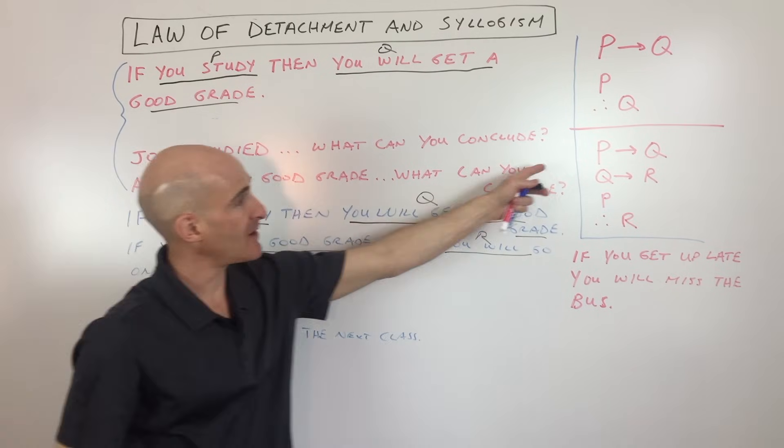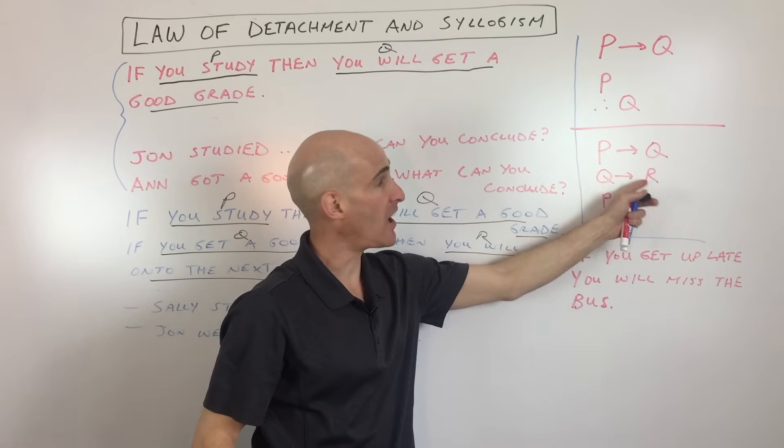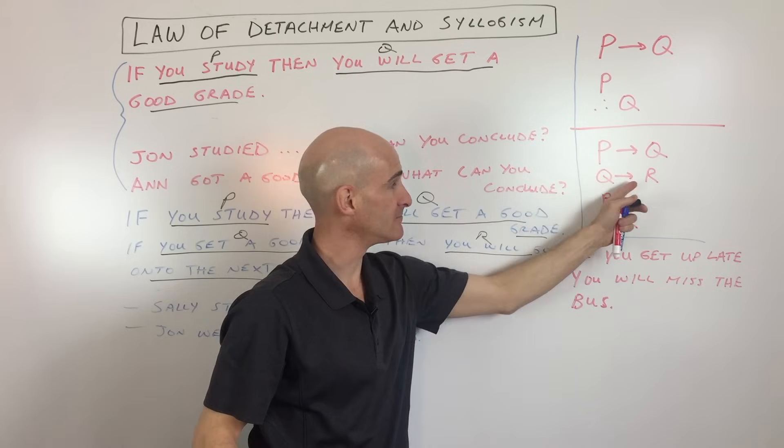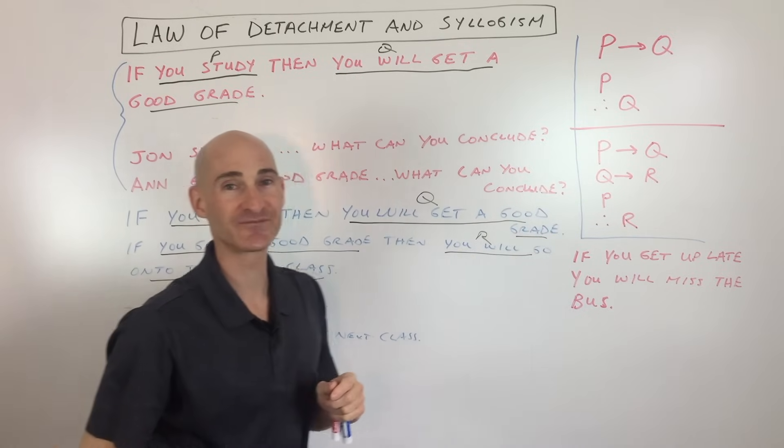So just like we diagrammed out here, P causes Q, Q causes R. So through that chain of events, if P happens, it will cause R to occur. So you're with me so far?